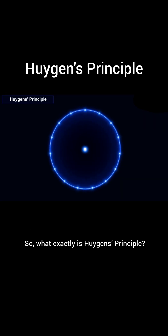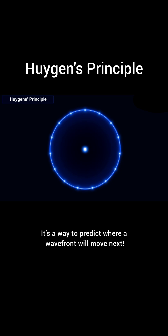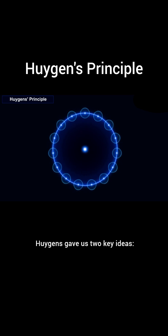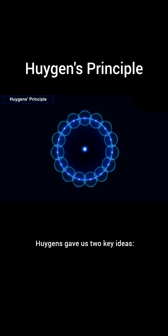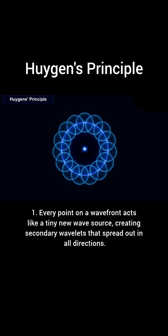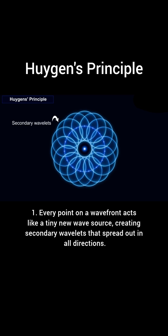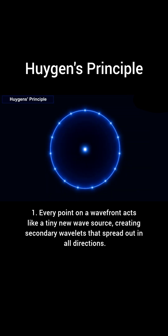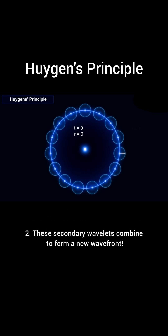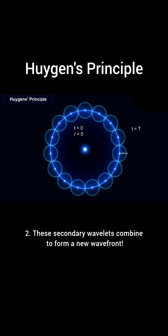So, what exactly is Huygens' Principle? It's a way to predict where a wavefront will move next. Huygens gave us two key ideas. One, every point on a wavefront acts like a tiny new wave source, creating secondary wavelets that spread out in all directions. Two, these secondary wavelets combine to form a new wavefront.